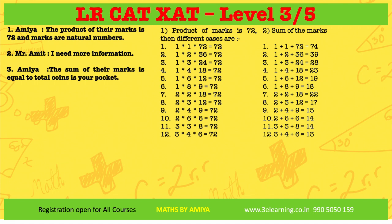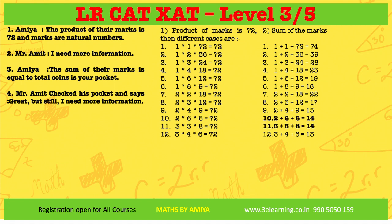Amit has his pocket, he knows how many coins he has. He checked his pocket and said he still doesn't know — this means there is ambiguity. Ambiguity means more than one case. Look at the sum column: check which sum appears more than once. The sum 14 appears twice. If Amit had 74 coins, he'd know it's 1,1,72 — but he still doesn't know, which means the combination with sum 14 appears twice.